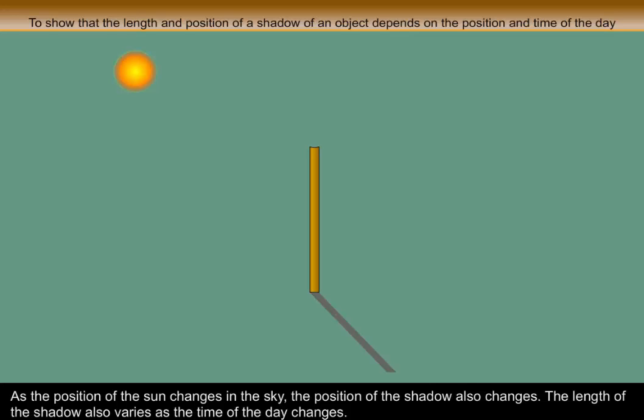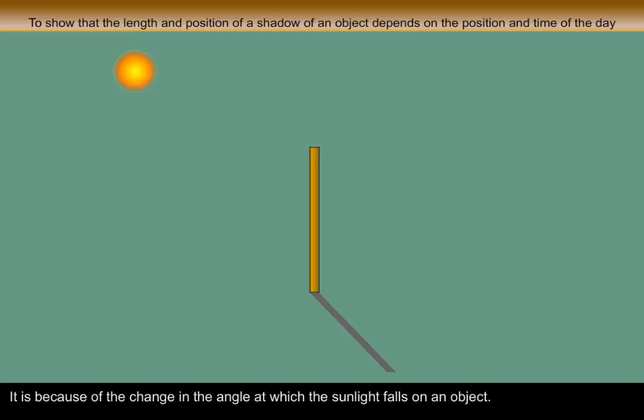The length of the shadow also varies as the time of the day changes. It is because of the change in the angle at which the sunlight falls on an object.